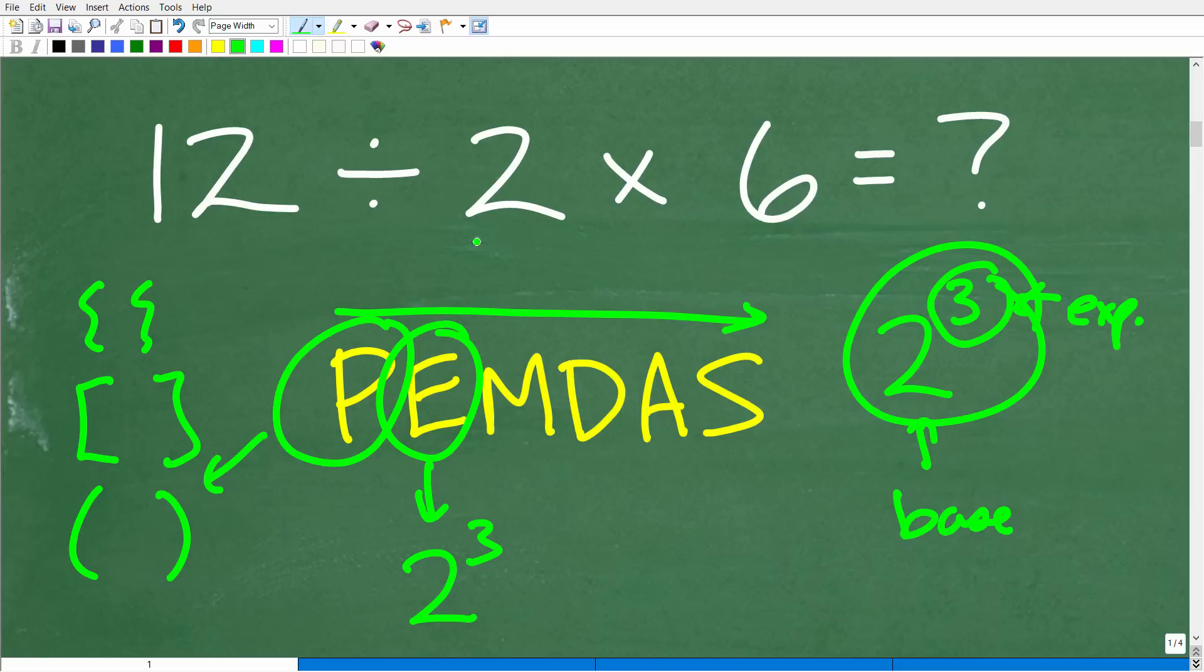Now of course our problem we don't have any power so these two steps right here don't apply. Okay so let's talk about these last steps and this is where most of the confusion comes in in terms of the order of operations.